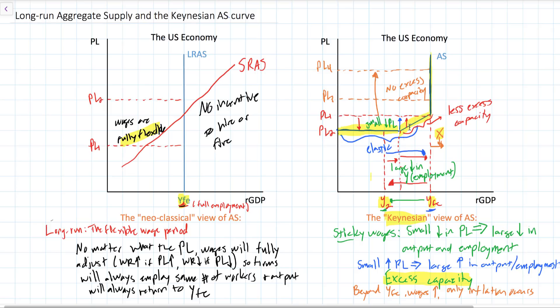Between this video and the last, we've defined aggregate supply as the quantity of output that a nation's firms wish to produce at a range of price levels. We've looked at different assumptions — in the short run when wages are fixed, and in the long run when wages are fully flexible. We've looked at the Keynesian aggregate supply curve, which is a hybrid of the short-run upward-sloping AS curve and the long-run vertical AS curve. Moving forward, we're going to add an aggregate demand curve to this model and look at how equilibrium output and price level are determined based on the level of aggregate demand and aggregate supply.